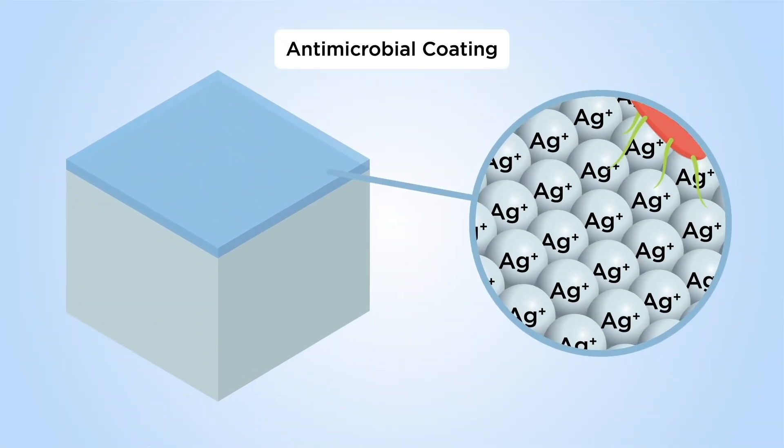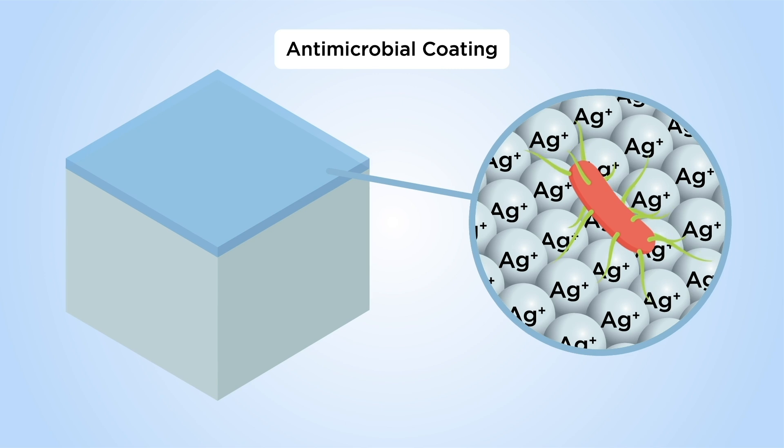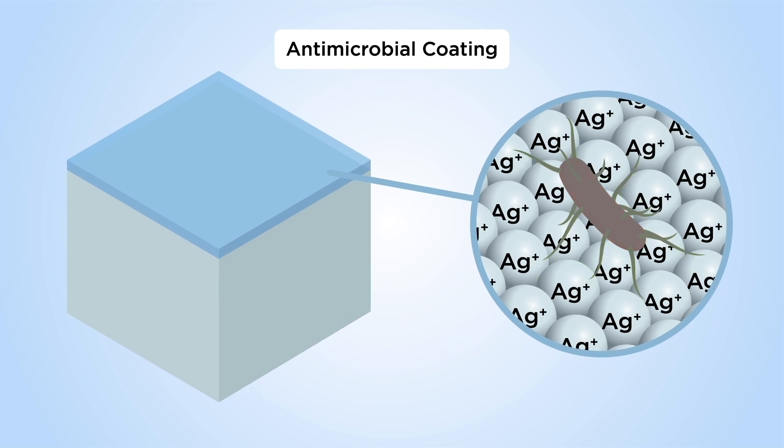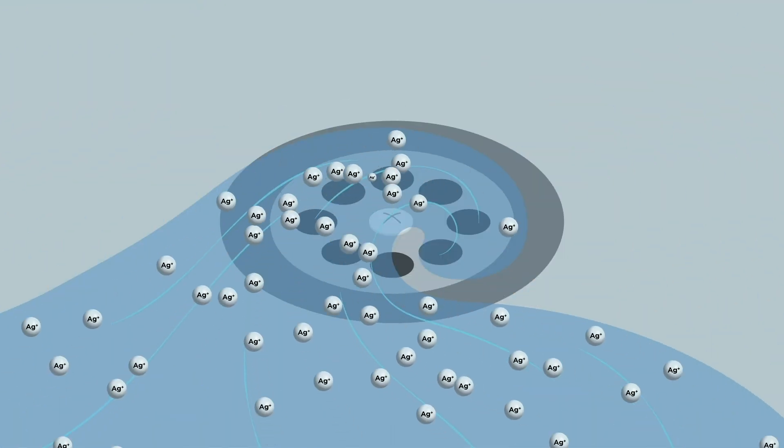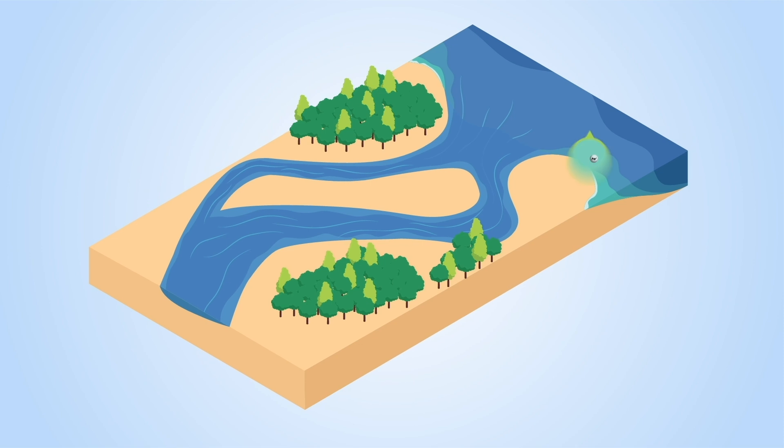Until now, antimicrobial coatings have used chemicals to kill microbes. These include silver-based chemicals. However, these chemicals can be damaging to the environment.